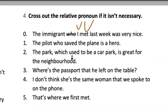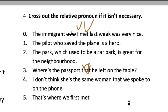Number two: we should not take it out because there's no subject and this is functioning as a subject. Number three: where is the passport? That isn't necessary — so we take it out. Why? Because we have the subject and the verb. 'I don't think she's the same woman that we spoke to on the phone' — subject 'we' and verb 'spoke,' so we don't need it.